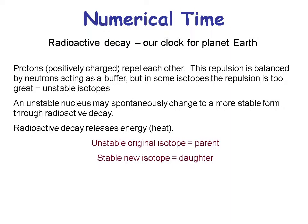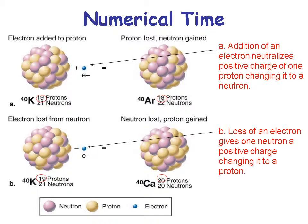Radioactive decay is our clock for planet Earth. Protons repel each other because they're both positively charged, and this repulsion is balanced by neutrons, which act as a buffer. In some isotopes, the repulsion is too great and those are unstable. All unstable isotopes may spontaneously change to a more stable form through radioactive decay, which releases energy or heat. We think about a parent — the original unstable isotope — and a daughter, which is the more stable new product after radioactive decay.